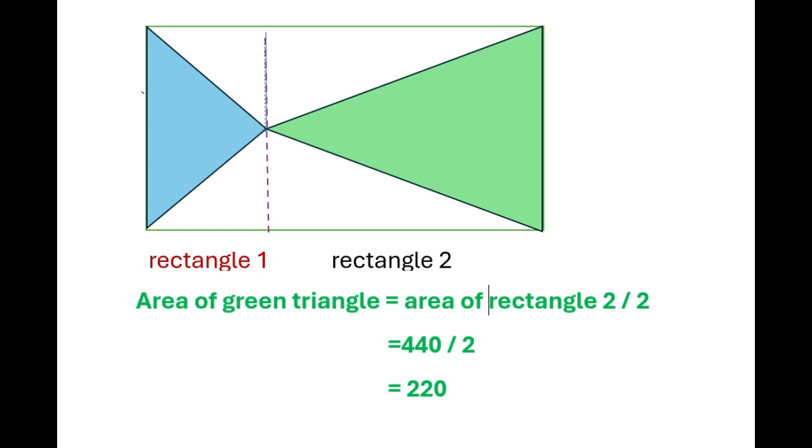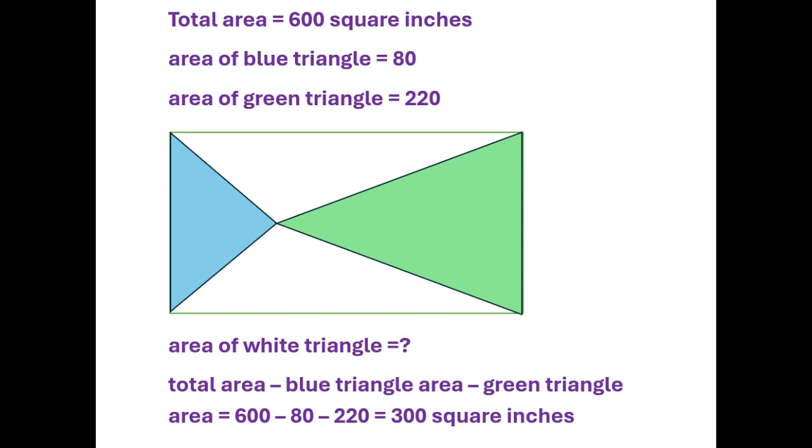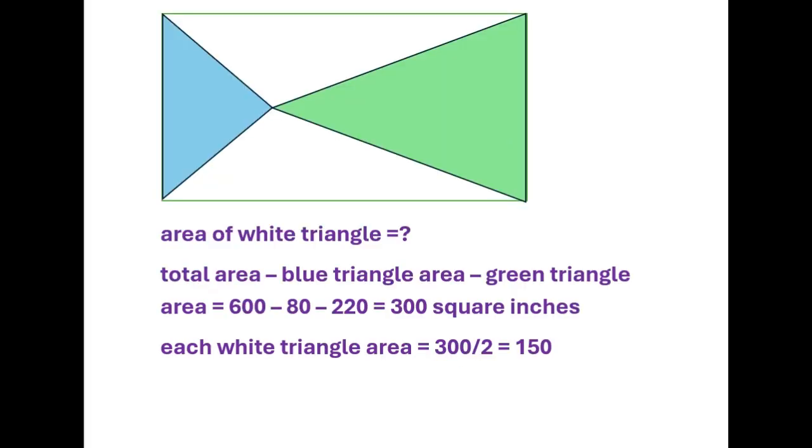Correct. Smart Kiko. Kiko is so smart! How much is white triangle now? Should be total area minus blue triangle minus green triangle, which is 600 minus 80 minus 220 and gets 300. This is the total of two white triangle areas. Each white triangle area should be half of it and is 150 square inches.